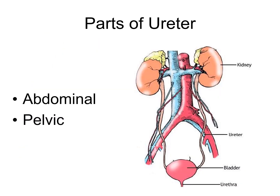Parts of ureter. The ureter is generally divided into two parts: abdominal and pelvic, each having equal length of about 12.5 cm. The abdominal part extends from the renal pelvis at the lower pole of the kidney to the pelvic inlet or brim at the bifurcation of the common iliac artery. The pelvic part extends from the pelvic brim at the level of bifurcation of the common iliac artery to the base of the urinary bladder.